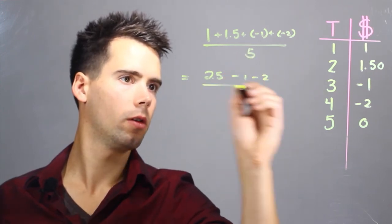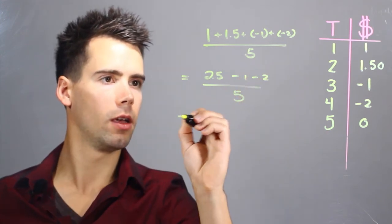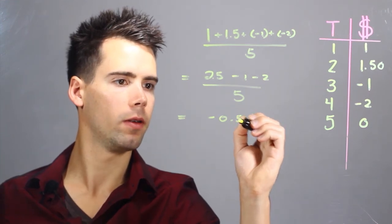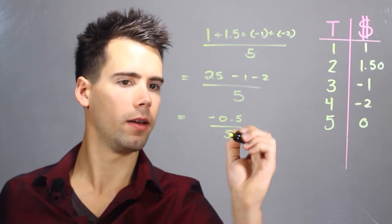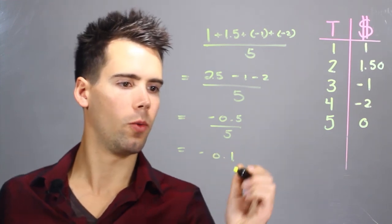Minus 2, over 5. And this part just becomes negative 3. And we find it's equal to negative 0.5 over 5, which is equal to negative 0.1.